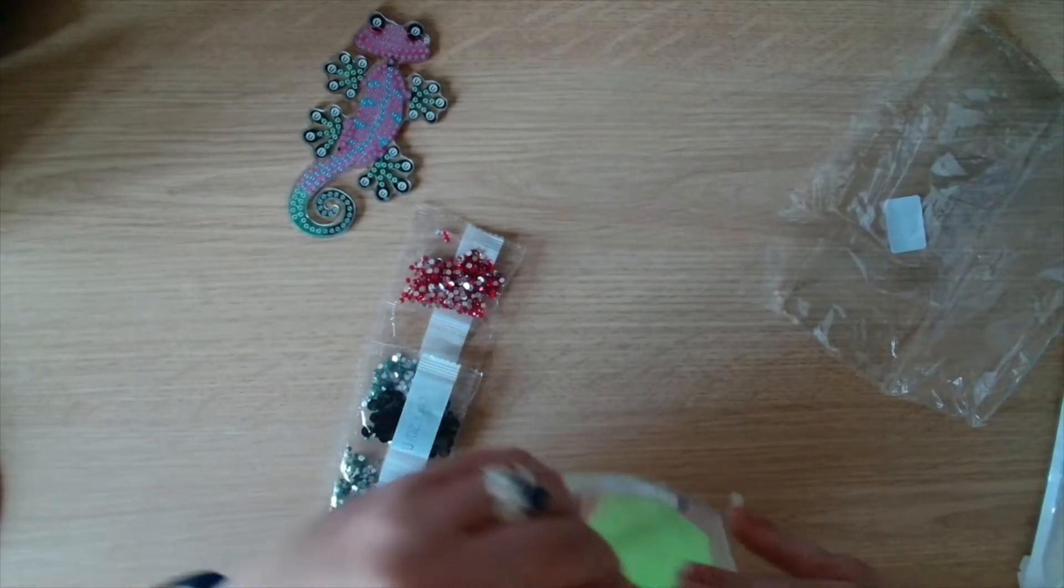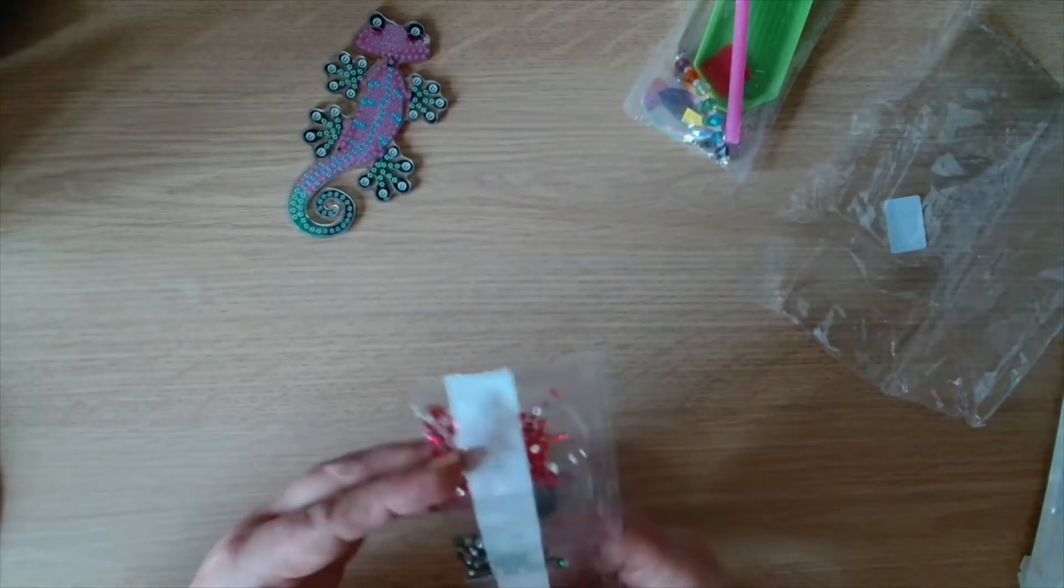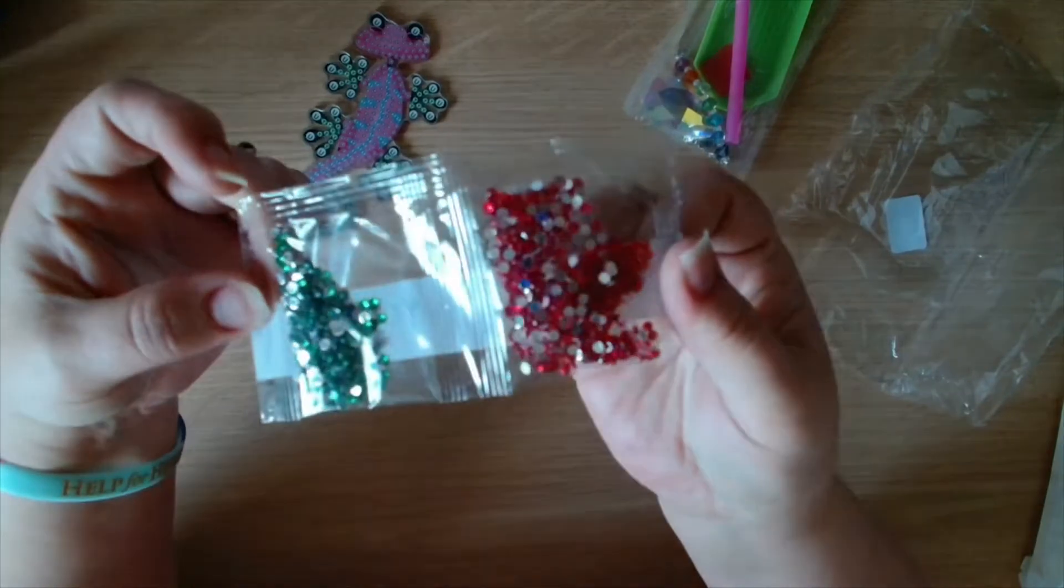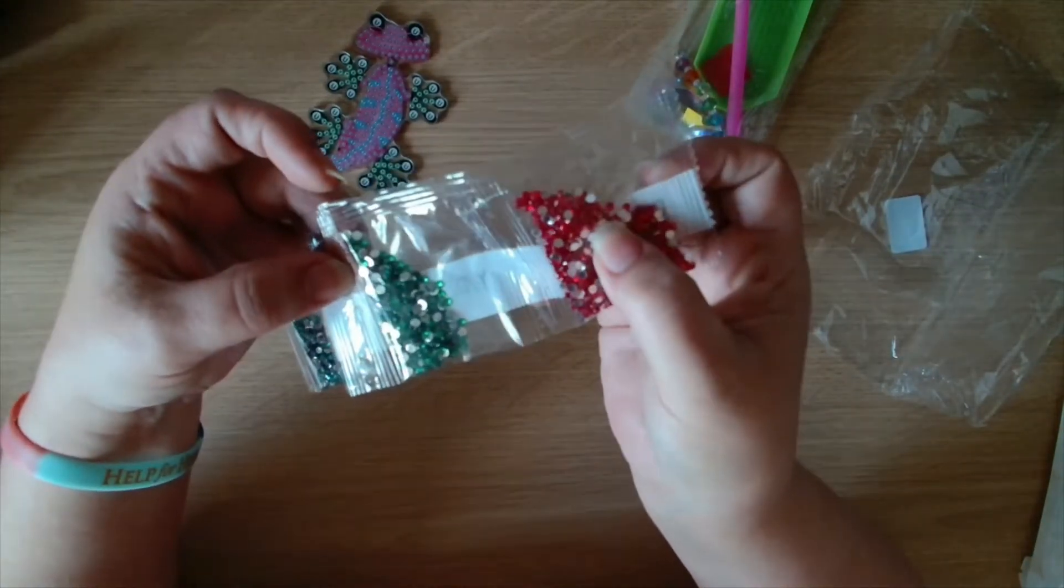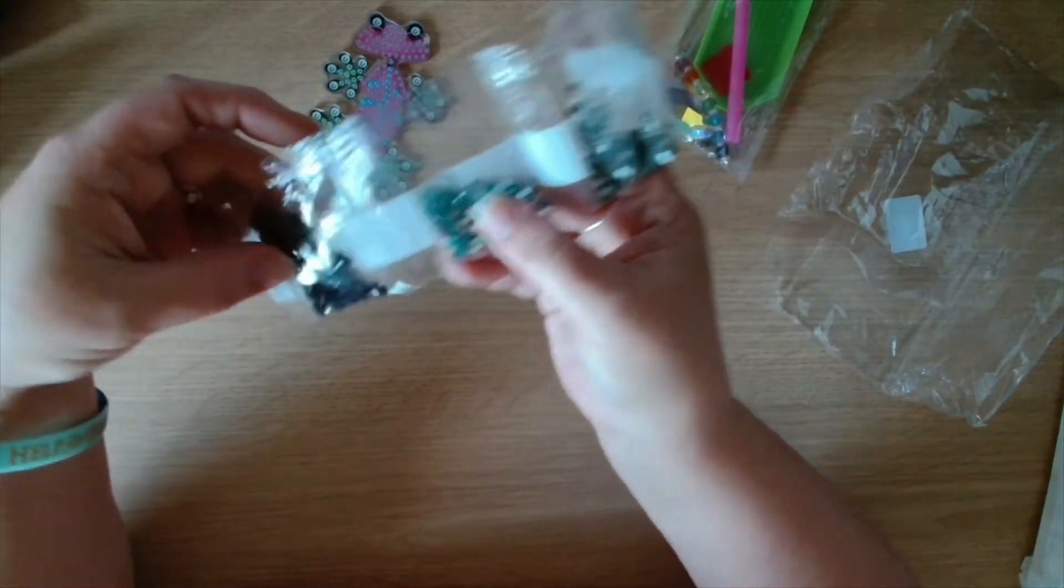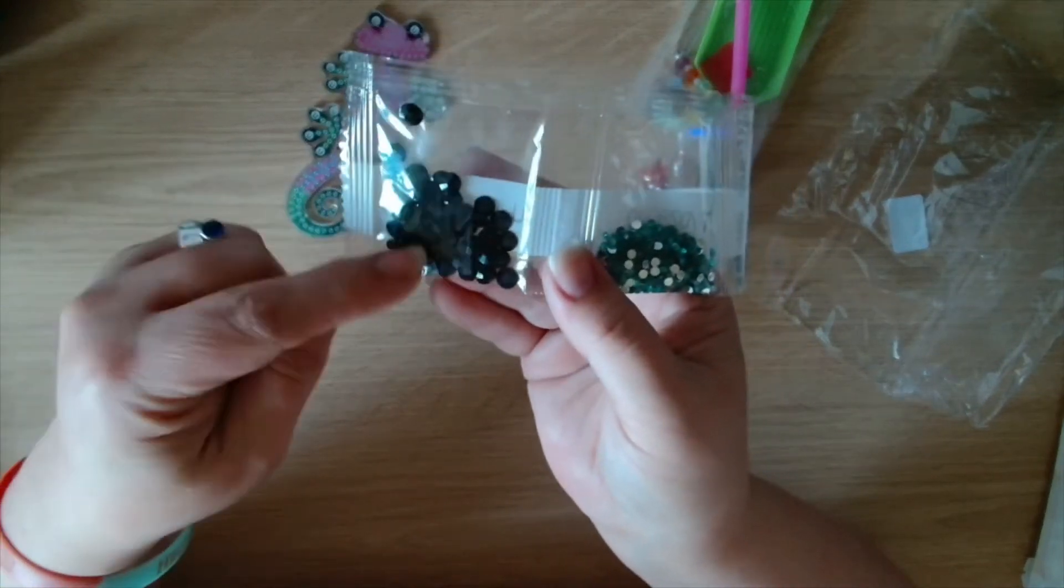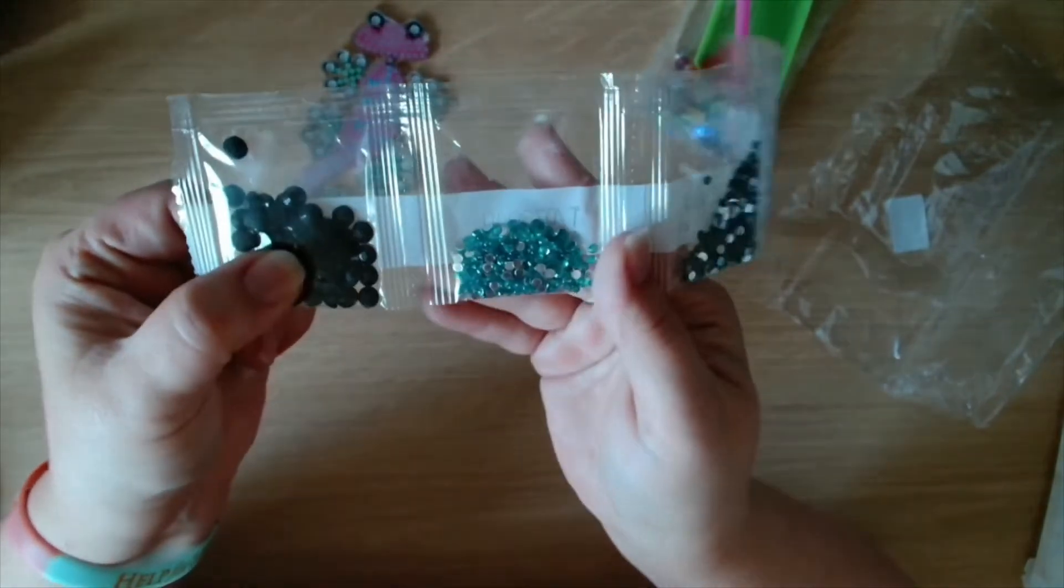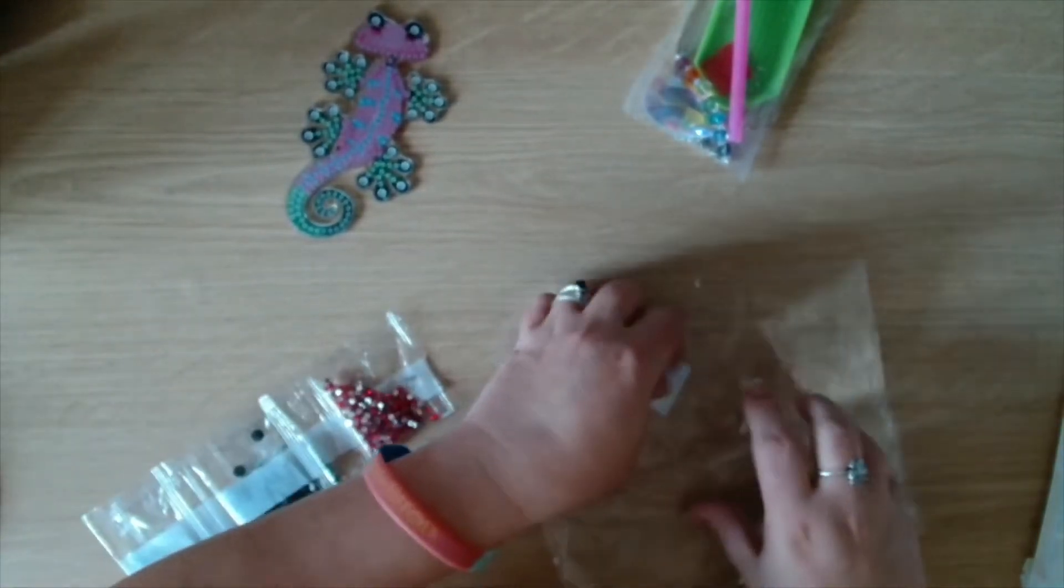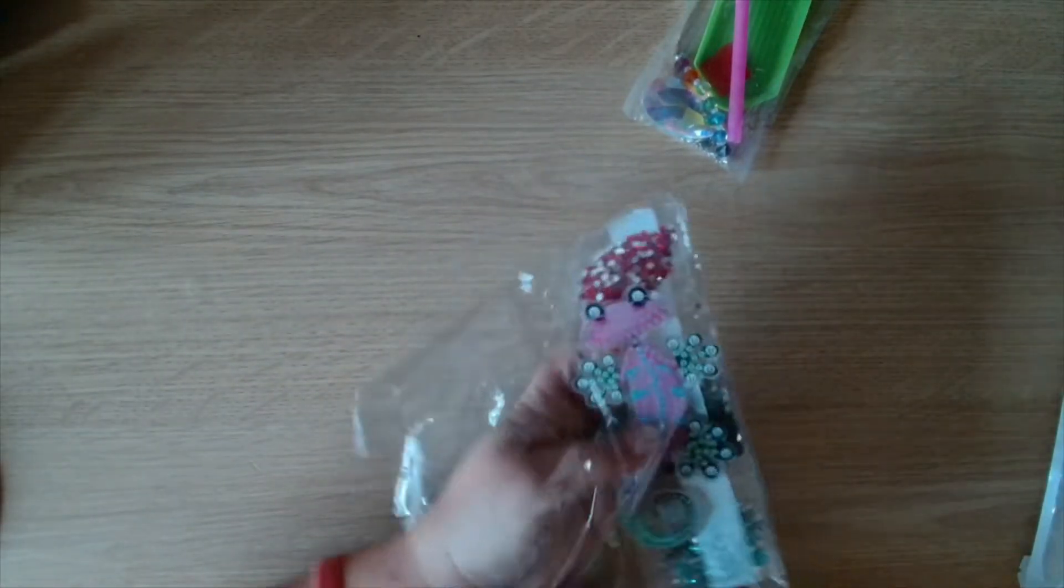Let's have a look at the crystals, the crystal rhinestones that we get. We get a lovely pinky red color, a green, a darker green, a teal, and then we get a big black gem. I think that's going to go on the feet and the eyes. Very very nice, very sweet. I'm going to put all these back in the bag so I don't lose any of it.